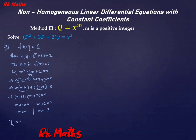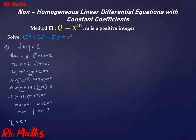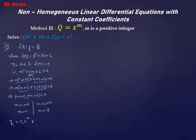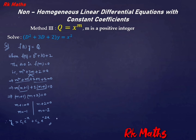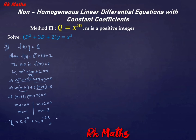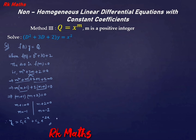The complementary function is: CF = c₁e^(−x) + c₂e^(−2x). Same procedure, no change.